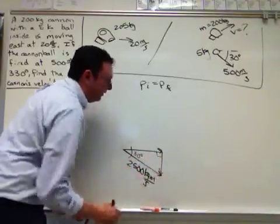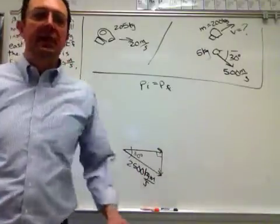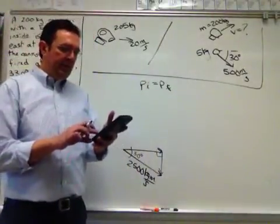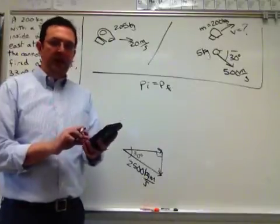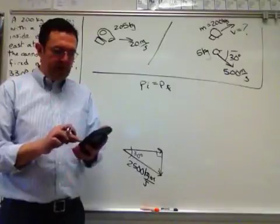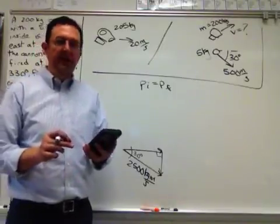30 degrees right triangle. And then take your trusty calculator and quickly place in there 2500 cosine 30, enter. 2500 sine 30, enter. And you get two values.